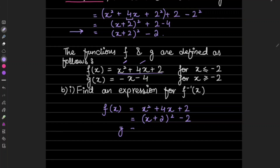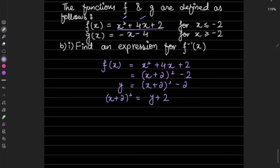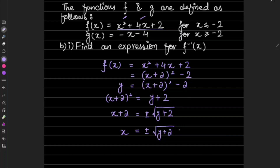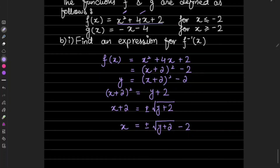Let y = (x + 2)² − 2. Now make x the subject: (x + 2)² = y + 2. Taking square root on both sides gives x + 2 = ±√(y + 2), so x = ±√(y + 2) − 2. This is an expression for f inverse.